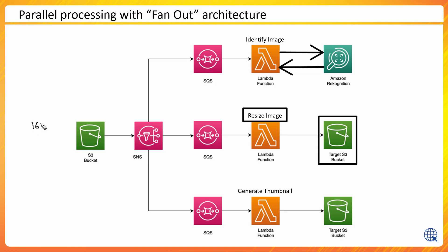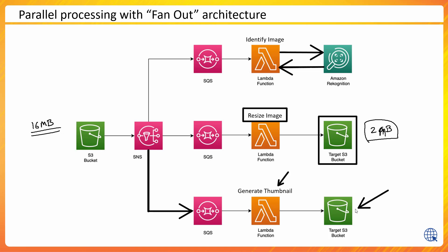So maybe the image uploaded was 16 MB, but the application doesn't support that large a size — we can resize it down to 2 MB. A third thing we're doing through SNS — this is a one-to-n relationship — is sending information to another queue that generates a thumbnail of the image, which is stored in a target S3 bucket. This is the fan-out architecture with parallel processing.